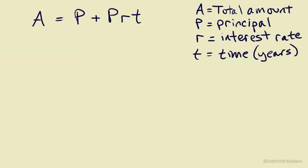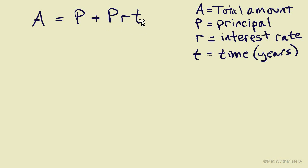We're continuing to work with formulas and now we'll use the formula for simple interest. Calculating the total amount in an account — either an investment account or a loan — it equals the principal, which is our original amount invested or the original amount of the loan, added to the product of the principal times the interest rate times the time in years. The formula is solved for A, the total amount, and is set up for us to substitute numbers for P, R, and T to calculate A.